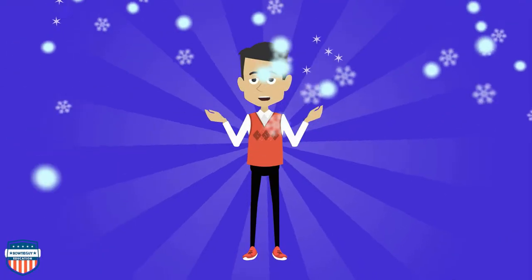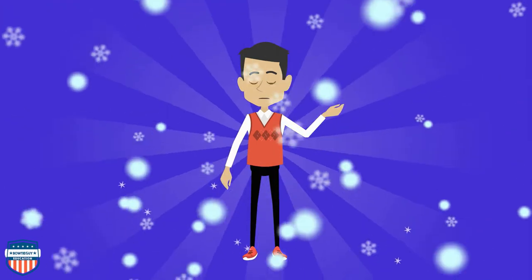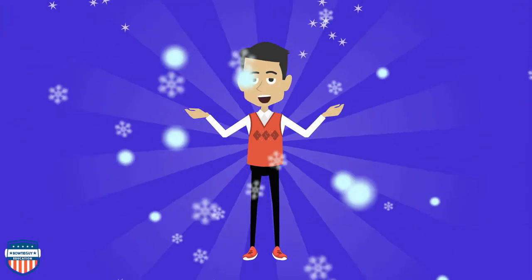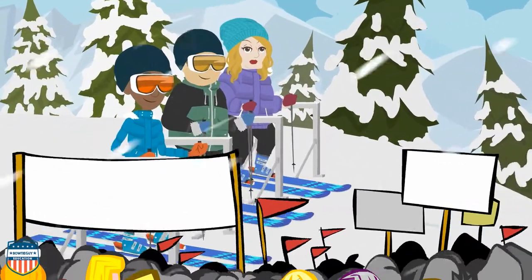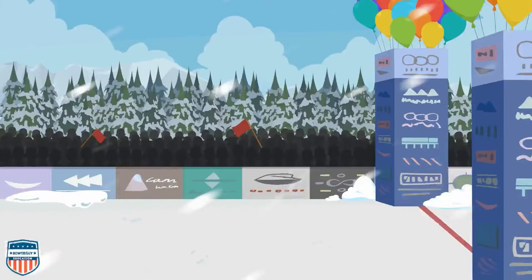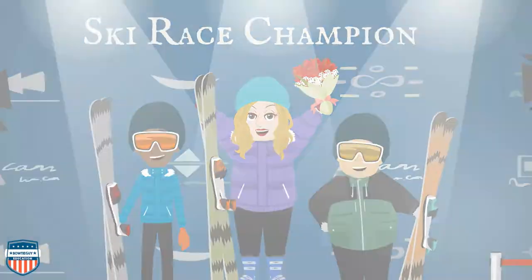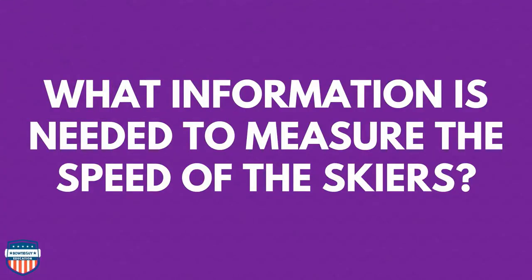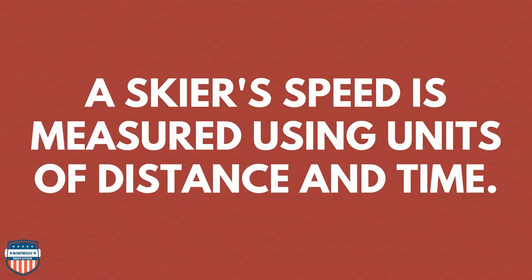Imagine if you will if we were watching a competition. Some skiers were wanting to race to see who could finish first. They line up at the starting line and they're off, then they come across the finish line — first, second, third place. What information is needed to measure the speed of the skiers? A skier's speed is measured using units of distance and time.